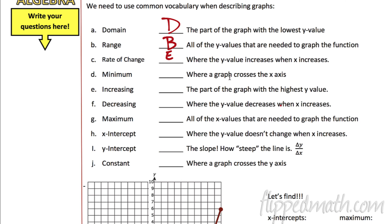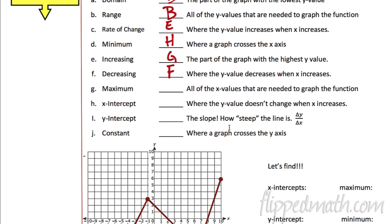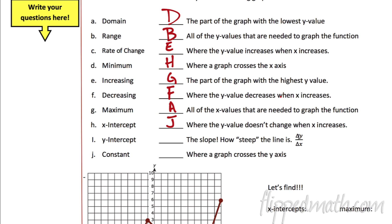Where the graph crosses the x-axis — that is called the x-intercept. The part of the graph with the highest y value — that is the maximum. And where the y value decreases — decreasing. All the x values that are needed to graph the function — that is the domain. Where the y value doesn't change — that is constant. And the slope: how steep a line is, changing y over changing x — that's what that delta means. Counting up and counting over — that is the rate of change, another name for slope.